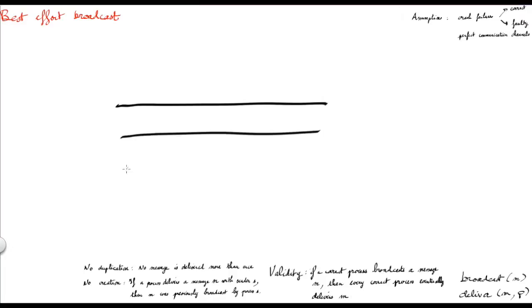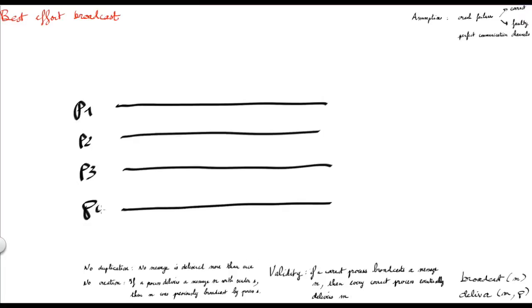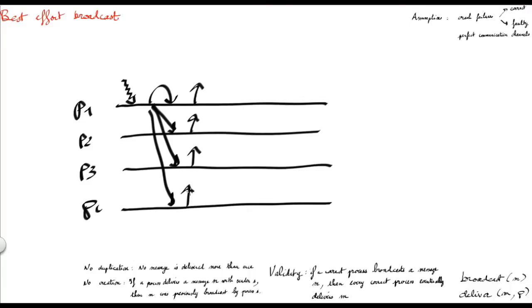Now let's design the algorithm. We have four processes p1, p2, p3, and p4. Assume p1 wants to broadcast a message — the application on node p1 requested this broadcast. What p1 will do is use its perfect communication links to all other processes and send the message to all of them, including itself. The algorithm is then very simple: as soon as a process receives a message, it delivers it to the application, represented here with an up arrow. This is the entire best effort broadcast algorithm.